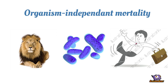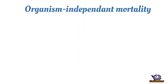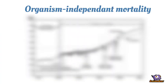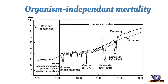In nature, all organisms suffer from exterior causes of mortality, such as predation, diseases, accidents, or food shortage. And in modern societies, we forgot how important they are. Just 300 years ago, the human life expectancy was about 25 years and half of newborns died before their 5th year.